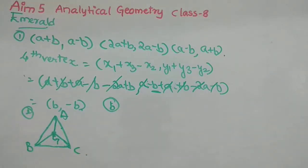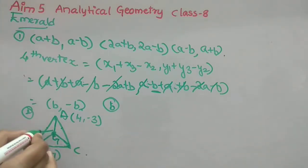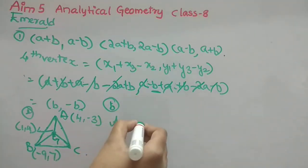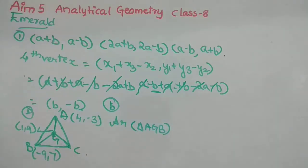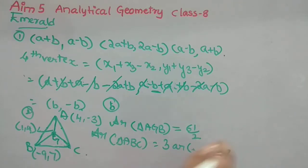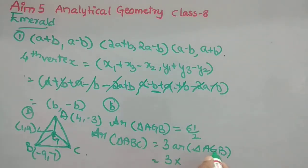We don't actually need to find vertex C directly. Area of triangle AGB equals 61/2. The key relationship is: area of triangle ABC equals 3 times the area of triangle AGB, because the centroid divides the triangle into three equal smaller triangles.